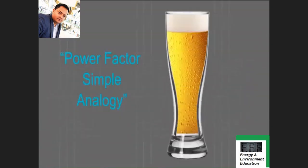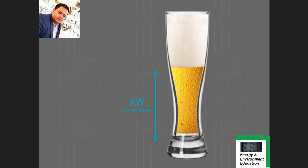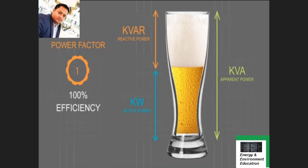Here is a simple analogy from everyday life to help you understand Power Factor. The thirst-quenching portion of the beer is represented by KW. The beer comes with some foam — the foam doesn't quench your thirst, and the foam is represented by KVAR. The total contents of the glass, the beer and the foam, is represented by KVA, and you pay for both. A power factor of 1 would mean 100% of the supply is being used efficiently, with no reactive power.